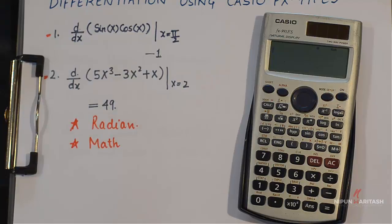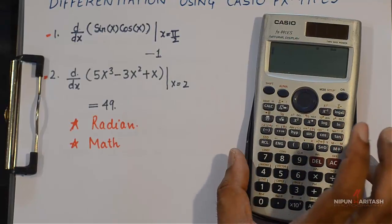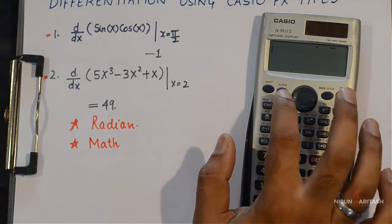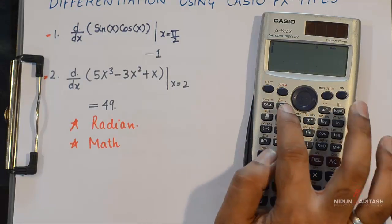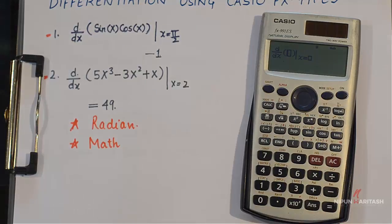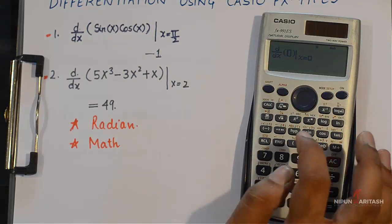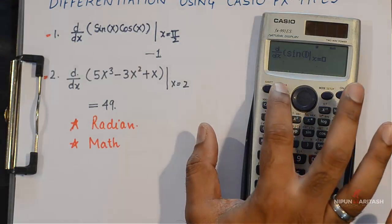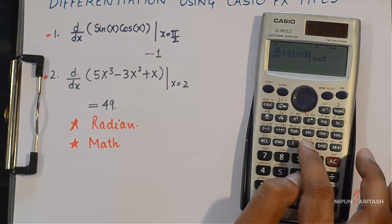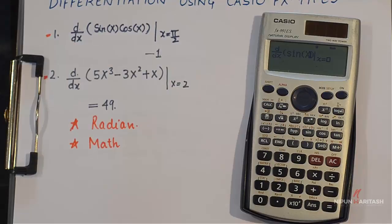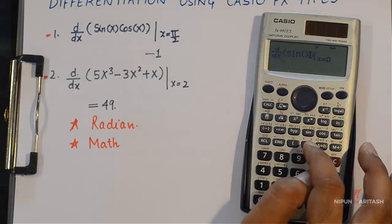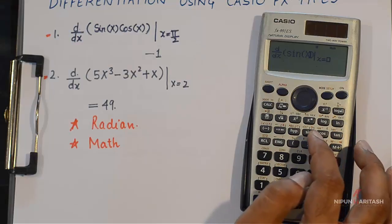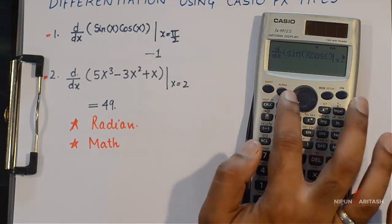I'll show you by putting this value of problem 1. You can press shift and integral sign whose alternate function is d by dx and then you can write sin. In order to put X you need to press alpha and the closing bracket. Then to put cos I need to put a bracket here for cos and I'll put X again.